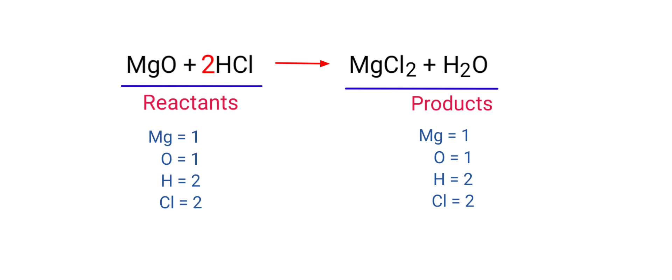The equation is now balanced. There are one Magnesium atom, one Oxygen atom, two Hydrogen atoms and two Chlorine atoms on both sides.